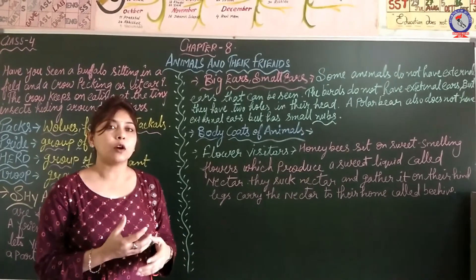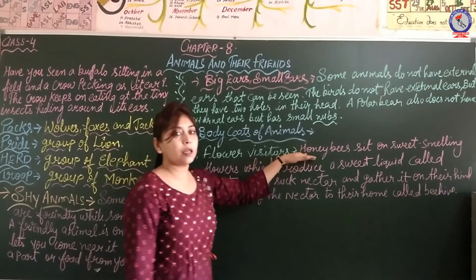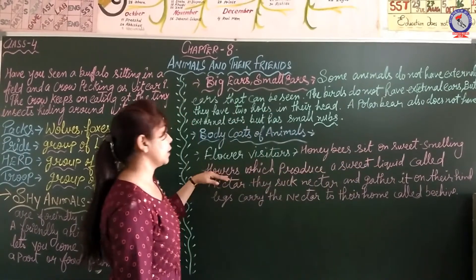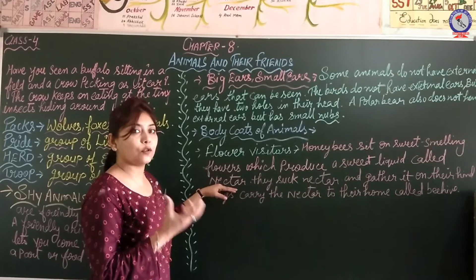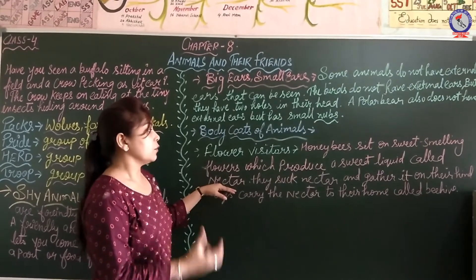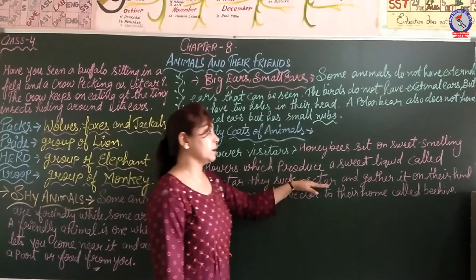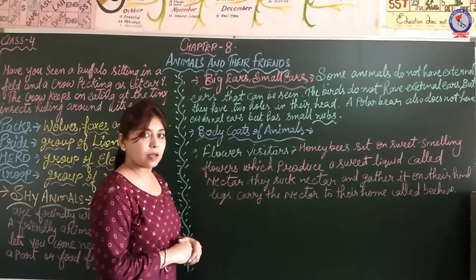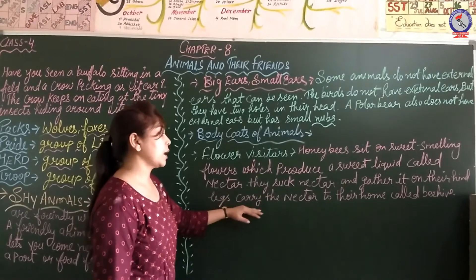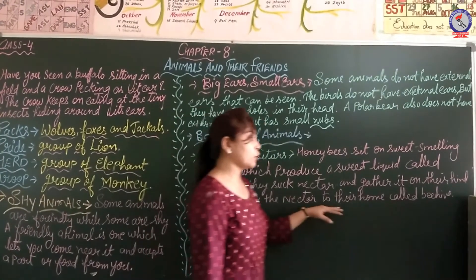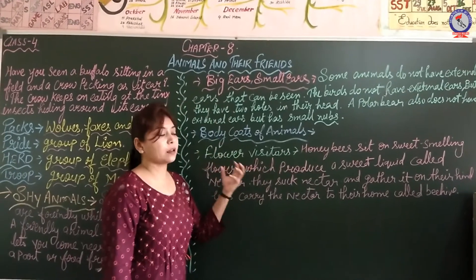Now, flower visitor. Have you seen a honey bee? A honey bee sits on sweet-smelling flowers which produce a sweet liquid called nectar. The honey bee collects the nectar from the flowers and gathers it on their thin legs, then carries the nectar to their home, which is called a beehive. There they collect all the nectar.